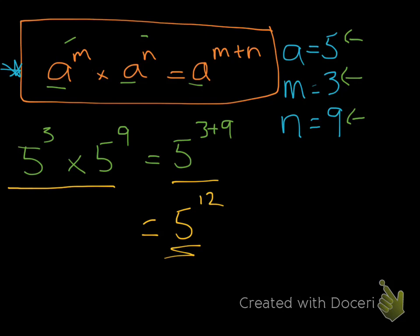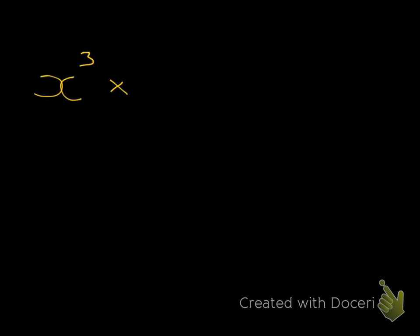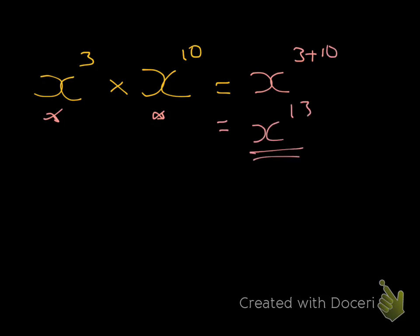Another thing I want to show you is how to do it when you have a base number that's a variable. I introduced variables in indices in my previous video. If I had x to the power of 3 multiplied by x to the power of 10 — same rule applies. It's got the same base, so we simply add the powers together. We would get x to the power of 3 plus 10, which gives x to the power of 13. That is the simplified form.